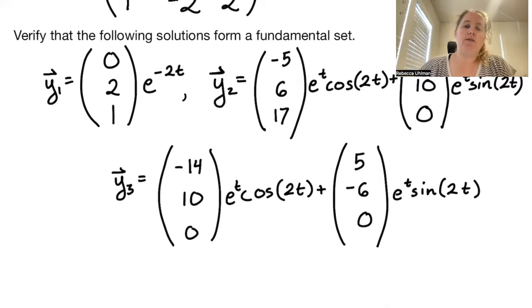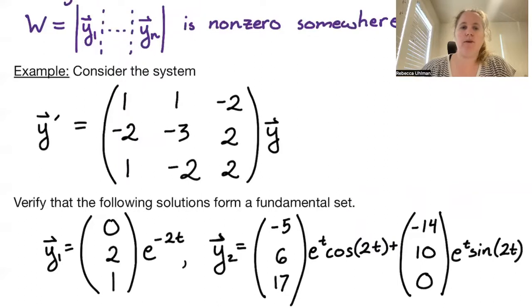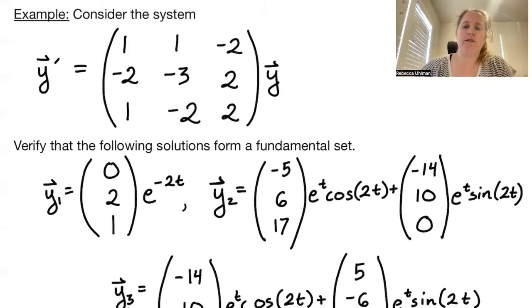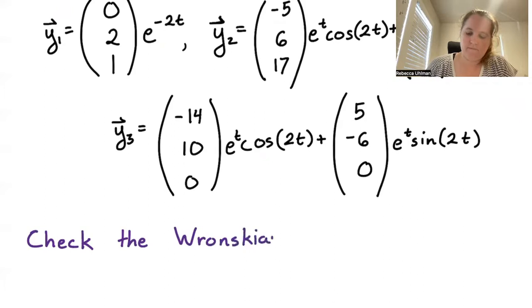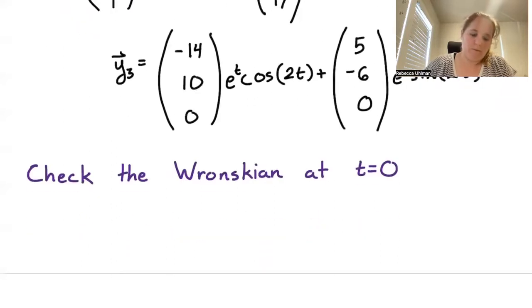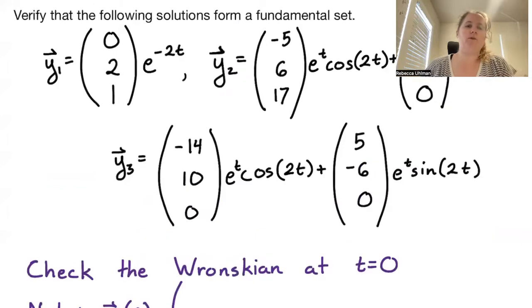We are going to check the Wronskian at 0. Our A of t is continuous everywhere, so we can check at any point. We'll check the Wronskian at 0. Note Y1 of 0 is just the vector 0, 2, 1.